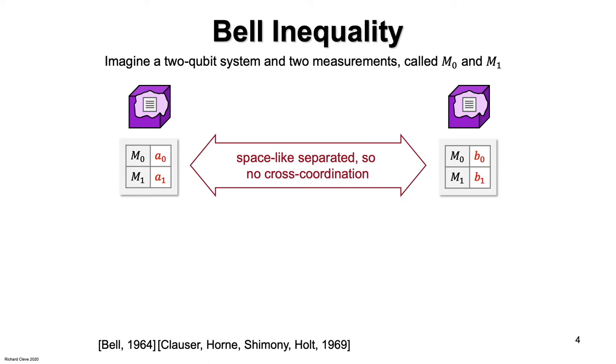For the Bell inequality, it is more convenient to think of the bit values as plus one and minus one instead of zero and one. We can perform the conversion like this.